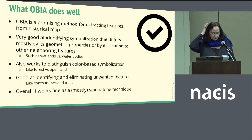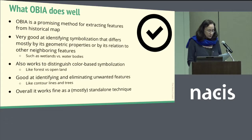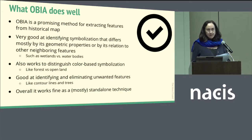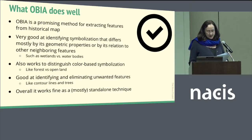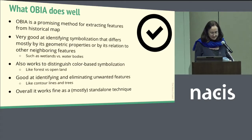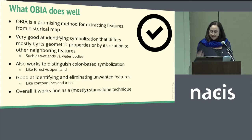OBA is a promising method for extracting features from historical maps. In particular, it is good at identifying symbolization that differs mostly by its geometric properties and by its relation to other neighboring features, such as wetlands versus water bodies. It also works to distinguish color-based symbolization, like forest versus open land. It is good at identifying and eliminating unwanted features like contour lines and trees. Overall, it works fine as a mostly standalone technique.